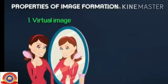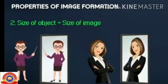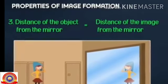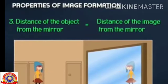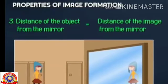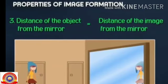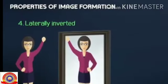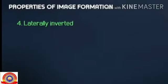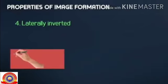Next we are going to study the properties of the image formed by a plane mirror. The image formed is virtual, and the size of the object is equal to the size of the image. The distance of the object from the mirror is equal to the distance of the image from the mirror — both distances are equal. The image formed is laterally inverted.